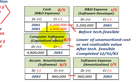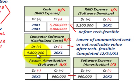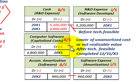For this capitalized amount of computer software, we use the lower of the unamortized cost or the net realizable value. We used the unamortized cost of $4,800,000, but if the net realizable value had been lower for whatever reason, then you would have used that lower amount. This is the capitalized amount after technological feasibility was established — the software was completed on 12-31-20X1, so that's the amount we capitalized.